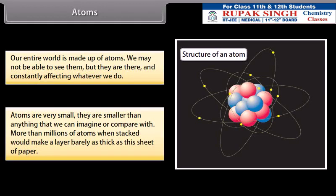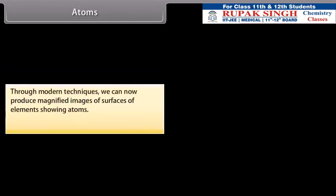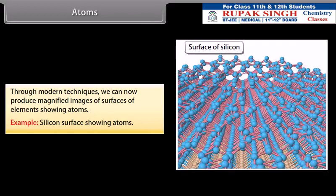More than millions of atoms, when stacked, would make a layer barely as thick as this sheet of paper. Through modern techniques, we can now produce magnified images of surfaces of elements showing atoms. Example: Silicon surface showing atoms.